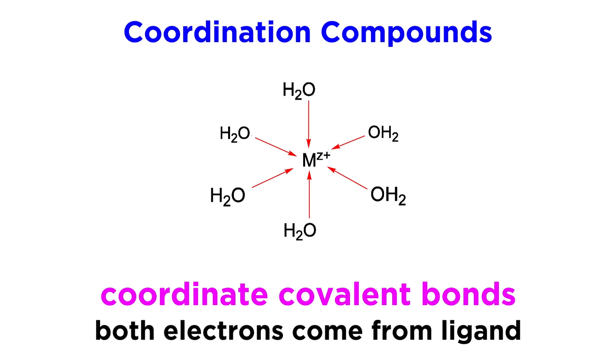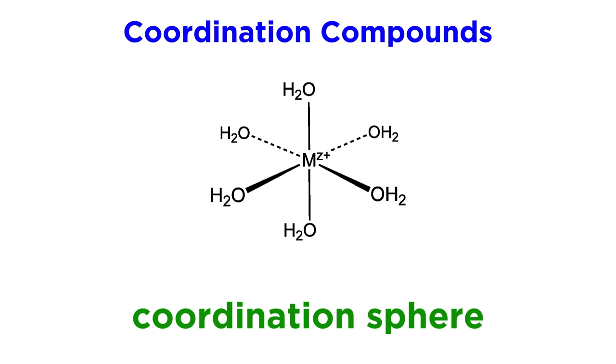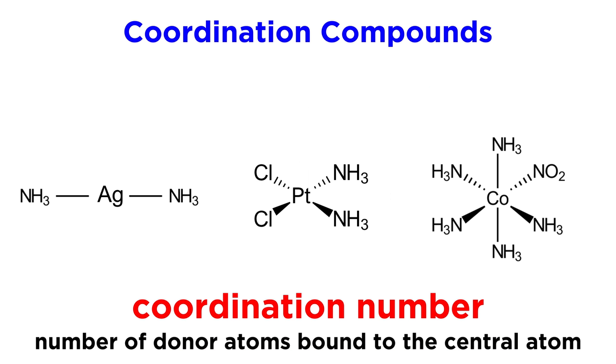With coordinate-covalent bonds, both of the electrons in the bond come from a Lewis base and are being donated to a metal center, like the lone pairs on each of these water molecules, which interact with the central metal ion to form this octahedral complex. If we want to show the coordination sphere, or the metal ion plus its ligands, using our standard notation, we will do this by placing brackets around the complex, as is shown here. Outside of these brackets will be listed any formal charge exhibited by the complex.